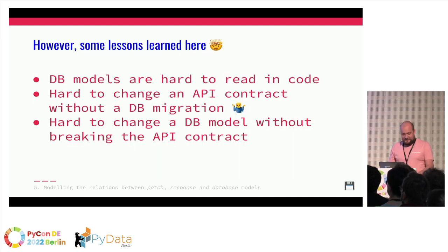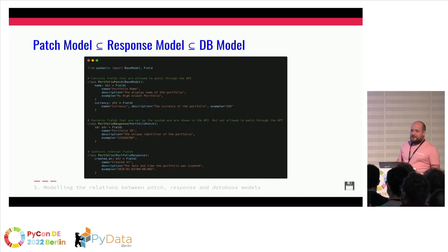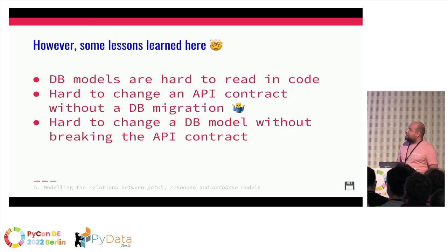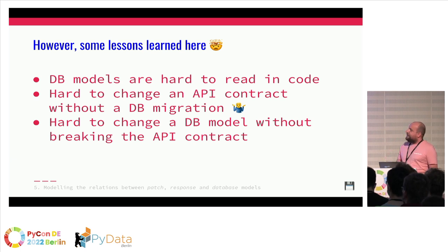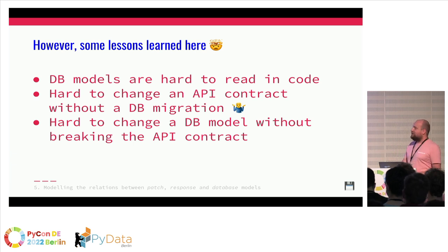But lessons learned here: the DB models — in a small example this looks fine, but in reality our portfolio model is much bigger. It makes the DB model hard to read — which fields are actually on that model when we inherit from a lot of things? Also, when we want to change something on the API, we're too tightly coupled with our database, so we have to do a migration. And the other way around: if we want to do a migration, we break our API contract. We're struggling with it — we chose to be fast and not repeat code.